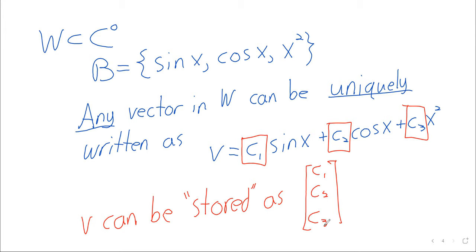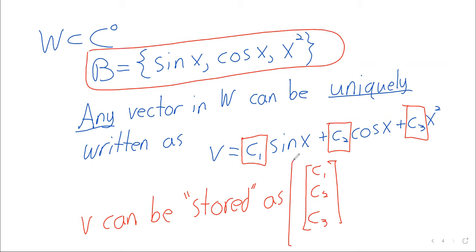This vector space seems complicated — if I asked you to graph 2·sin(x) − 10·cos(x) + 5x² in your head, probably no one has a very clear idea of what that vector looks like. And yet in another sense it must be quite simple, because it's being completely and perfectly stored using the basis and using column vectors in R3 that we've been using since the first week of class. This is what we're going to investigate.